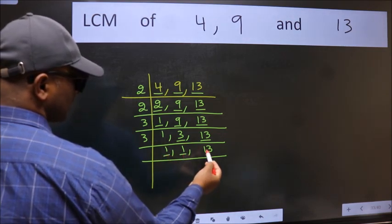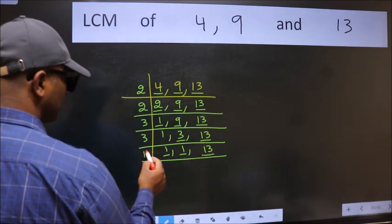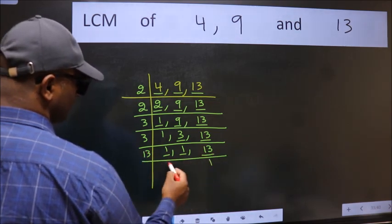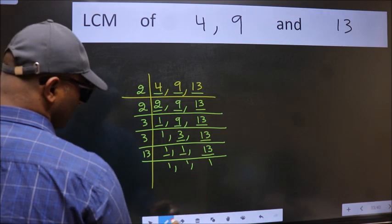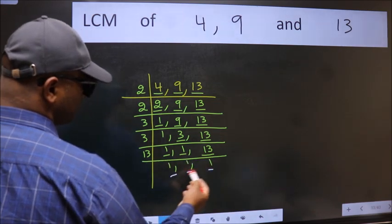So focus on the next number 13. 13 is a prime number, so 13 once is 13. So we got 1 in all the 3 places.